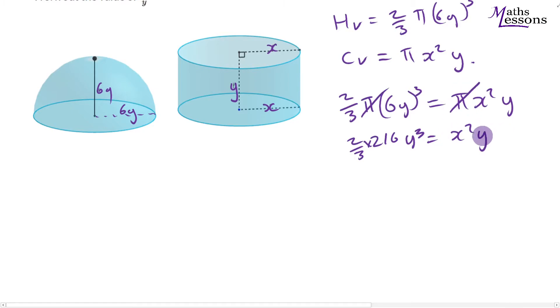And what we can do is we can straight away divide both sides by y. I'm just going to leave this bit here, I can't work this out just yet. I'm going to divide that by y to get y squared, and I'm going to divide this by y to leave me just x squared.